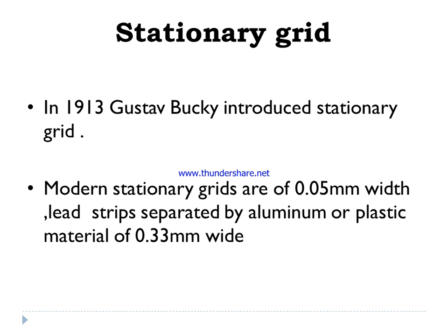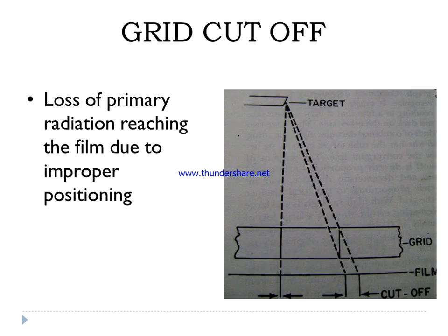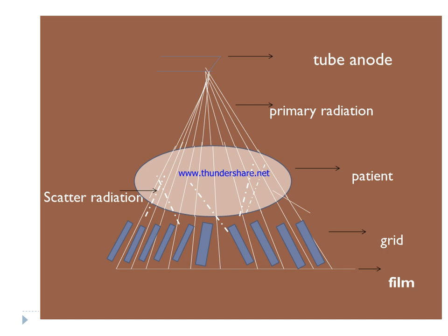Grid cutoff is the loss of primary radiation — where primary radiation does not reach the film due to improper positioning. When we do not position the patient properly, the primary radiation does not reach the film correctly. In the block diagram, the x-ray tube is shown at the top, with primary radiation emitting downward, and lead strips are arranged in the grid.